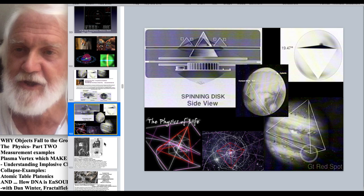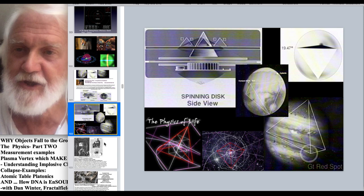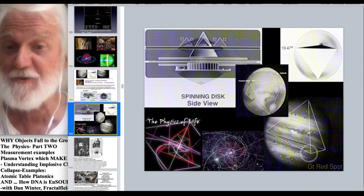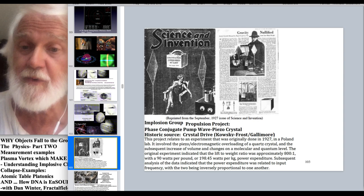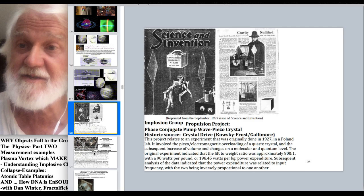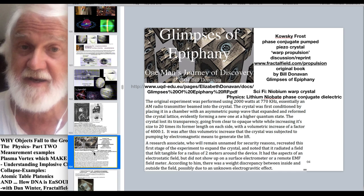You all remember Kepler saying this model of all the platonic solids in one nest saying that's how the gravity of the solar system worked. And so later we're going to talk about or we have talked about our work here with Bill Donovan all at fractalfield.com/propulsion showing examples of how a vortex makes gravity. And his book is there in the crystal propulsion section, credit to Bill Donovan, Elizabeth Donovan. Now in his book, Glimpses of Epiphany, mostly about Kosky Frost.